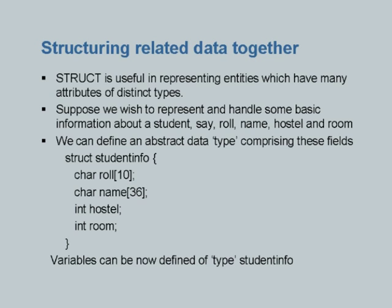There are occasions when you have to represent data which has different attributes. Take for example a student. When you want to represent some basic information about students — let's say the roll number, name, hostel number, and room number. In real life, you would have much more information. In our mid-semester exam itself, you would require to store marks for question 1A, 1B, 1C, 2A, bonus marks, and total.